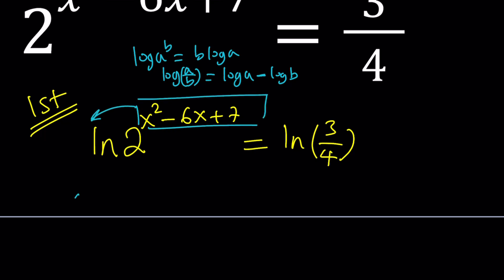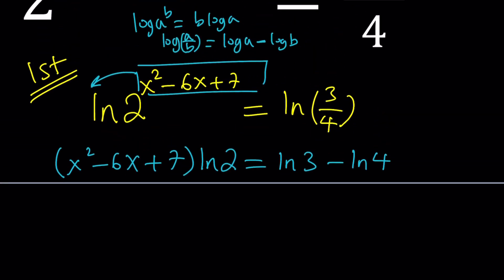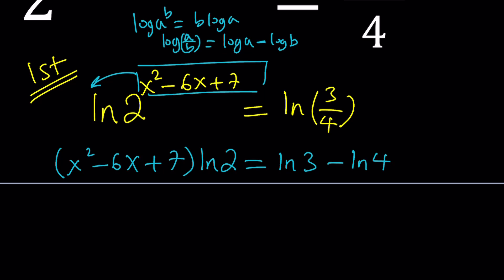That's the power x squared minus 6x plus 7 multiplied by ln 2 equals on the right hand side ln 3 minus ln 4. You don't have to do that, you can leave it. But the next thing we're going to do is solve this equation as a quadratic. First you need to distribute and then turn it into a full quadratic.